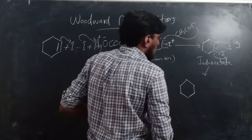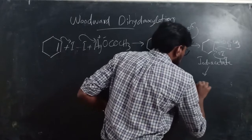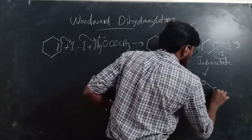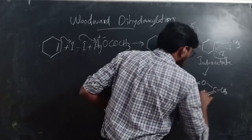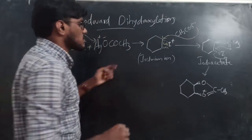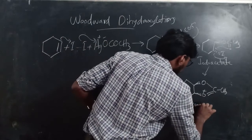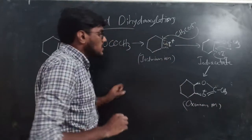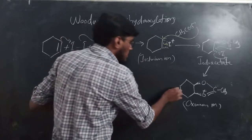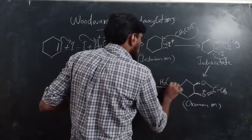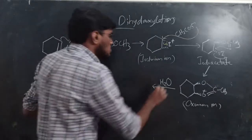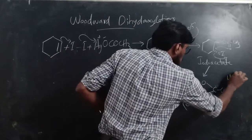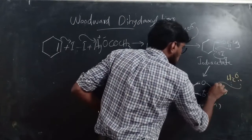The oxonium ion has a positive charge on oxygen with a C=O bond and CH3 group. In the Woodward dihydroxylation reaction, water is present. A water molecule attacks the carbon of the oxonium ion. At the same time, the C–O bond cleaves and shifts. The water adds to this carbon, producing an intermediate with an OH2⁺ group.